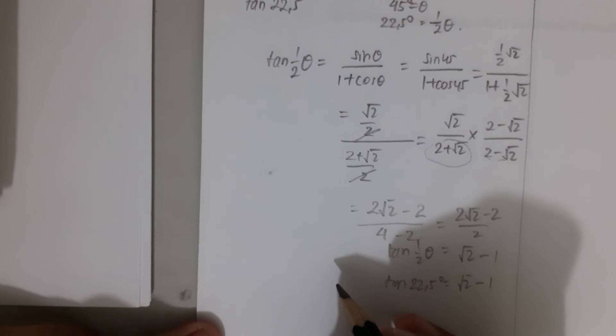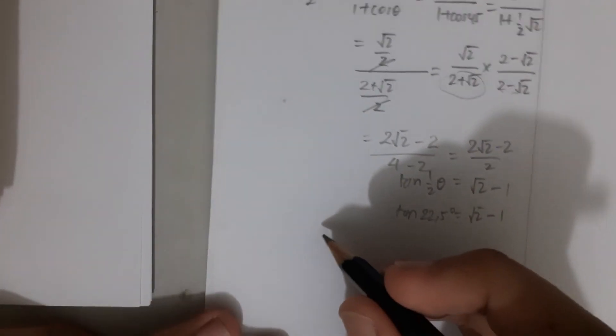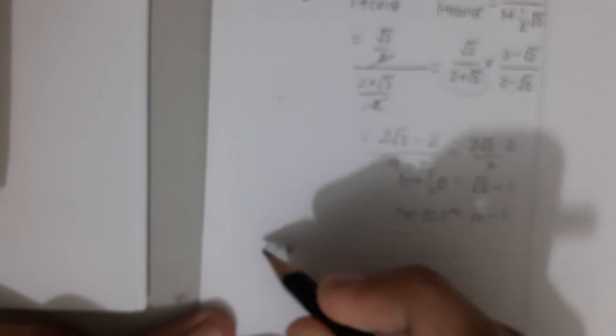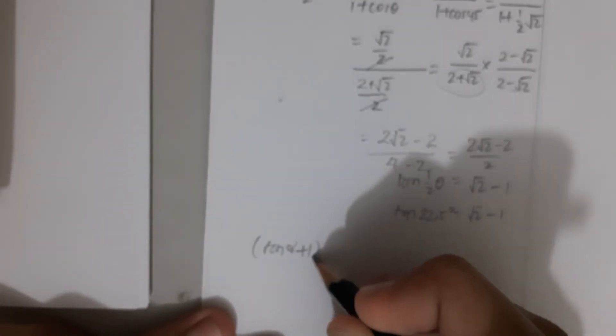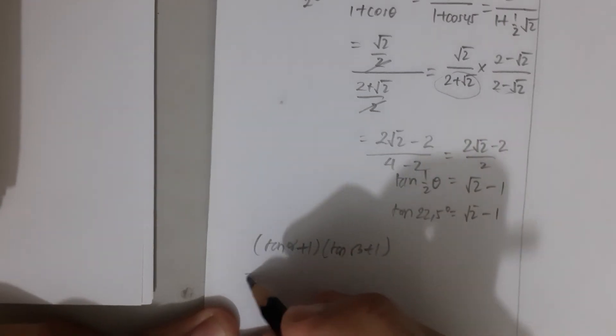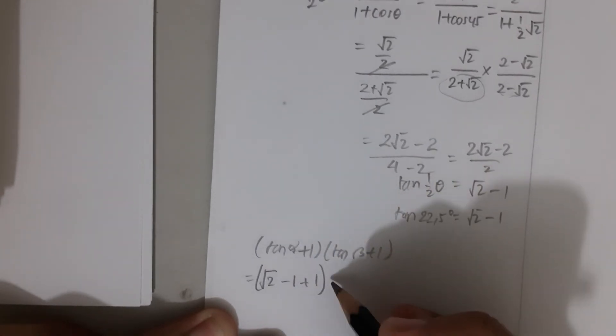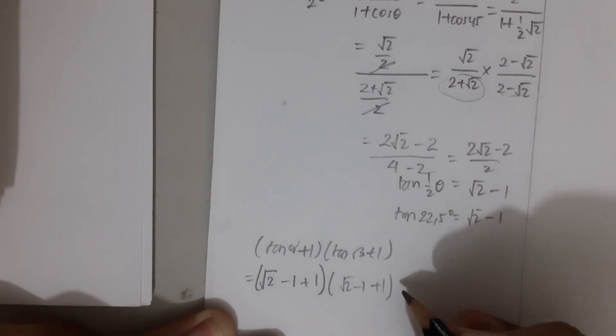So tan α is tan 22.5° = √2 - 1. We rewrite: (tan α + 1)(tan β + 1). This tan α is √2 - 1 + 1, and tan β is √2 - 1 + 1. This simplifies to √2 times √2, so this is 2.